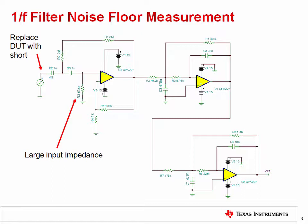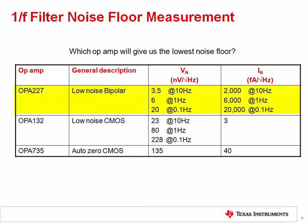To determine which amplifier works best, let's consider a few options. The OPA227 is a low noise bipolar op amp — intuitively the best choice because of low voltage noise, however its current noise is relatively high, especially at very low frequency, which matters in high input impedance applications. The OPA132 has higher voltage noise than the OPA227 but relatively low current noise. The OPA735 has higher voltage and current noise than the OPA132, but it is an auto-zero amplifier, which offers significant benefits in this application, as we will see on the next slide.